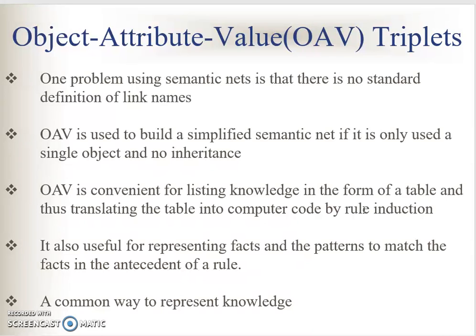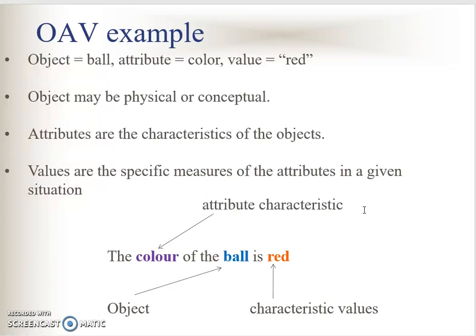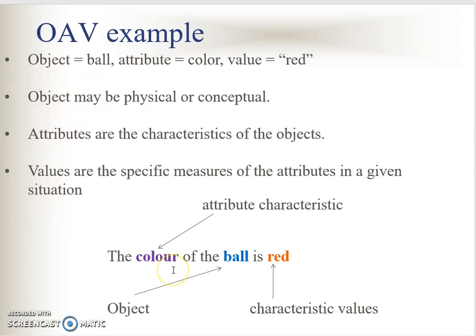Let's look at an example of object attribute values. In this sentence: the colour of the ball is red. The object is ball. The attribute we are going to describe is colour. And the value of the attribute is red.